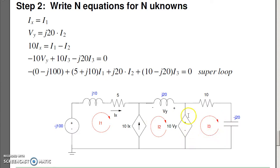This just says -10Vy + 10I3 - j20I3 = 0. The last equation, let's do a super loop. Just take this big outer loop, and that would just be -j100 + (5 + j10)I1 + j20I2 + (10 - j20)I3 = 0. There I've got five equations, five unknowns.